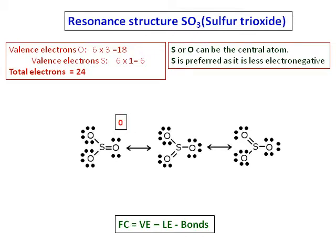The formal charges are calculated and you can see that the molecule as a whole is neutral. The double bond can be between sulfur and any of the three oxygens, and the structure of sulfur trioxide is represented by all three resonance structures. Therefore, the bond between sulfur and oxygen is neither a single bond nor a double bond — its length will be in between that of a single and a double bond.